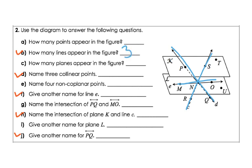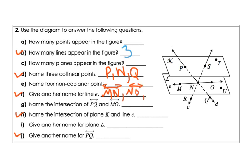Name three collinear points — remember, we're looking at points that form a line. There are multiple answers. P, N, Q would be one answer. You could have said M, N, O, or R, N, S — all acceptable answers. Give another name for line E. One answer can be M, N; you can do N, O; or M, O.